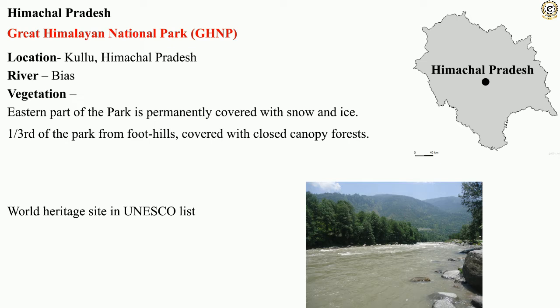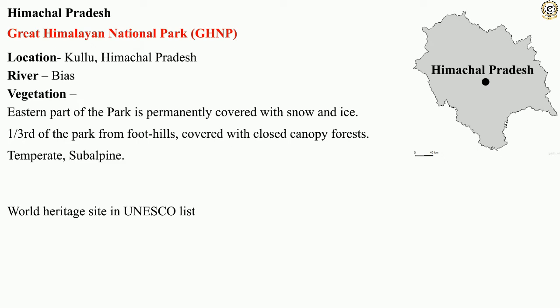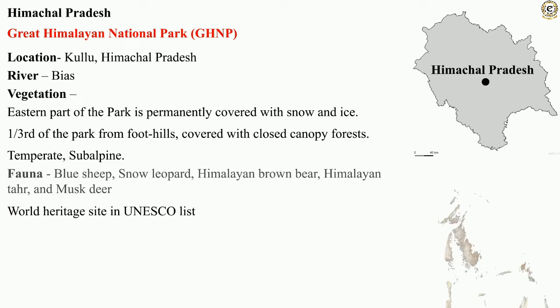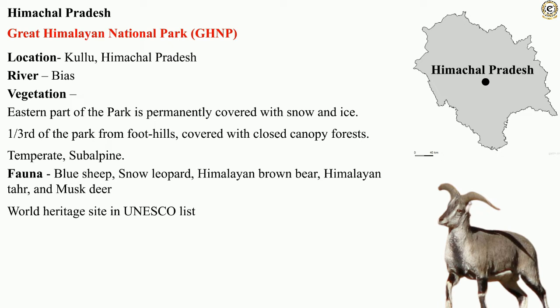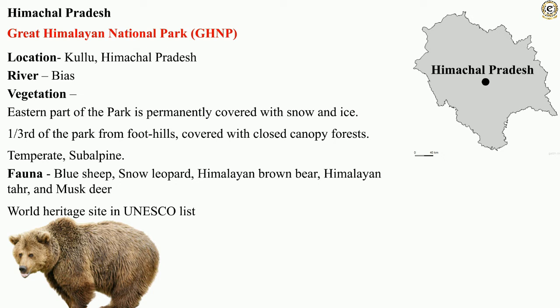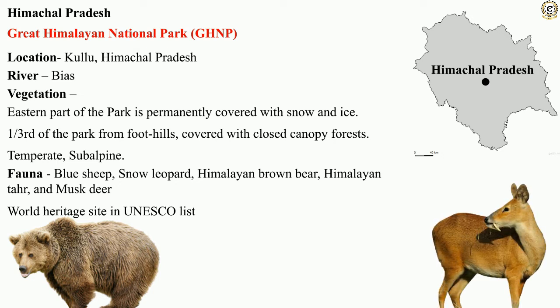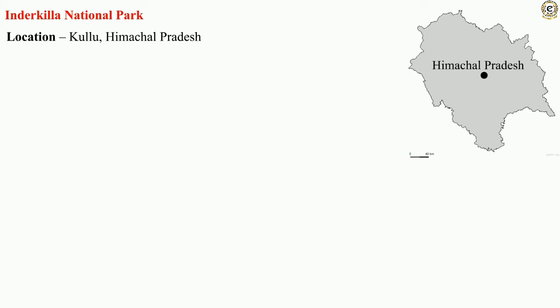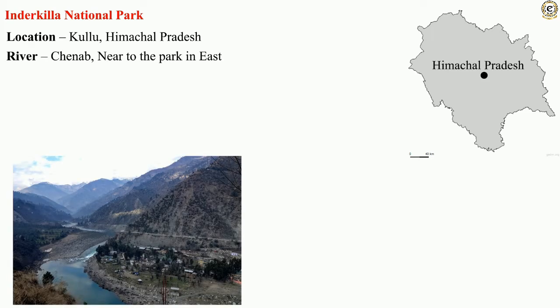One third of the park from the foothills is covered with closed canopy forest and the rest with temperate subalpine zones. The Great Himalayan National Park is home to blue sheep, snow leopard, Himalayan brown bear, Himalayan tahr, and musk deer. Indarkila National Park is also located in Kullu, Himachal Pradesh. The river Chanab passes on the eastern side of the park.